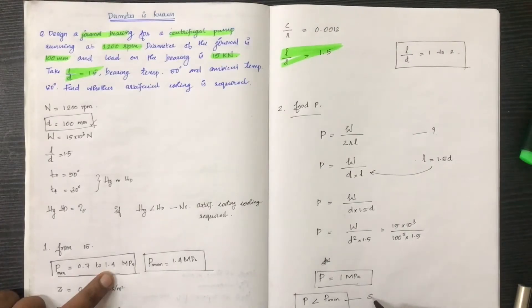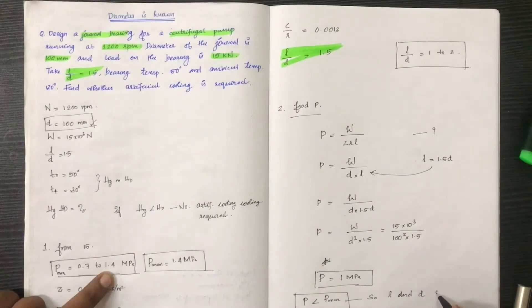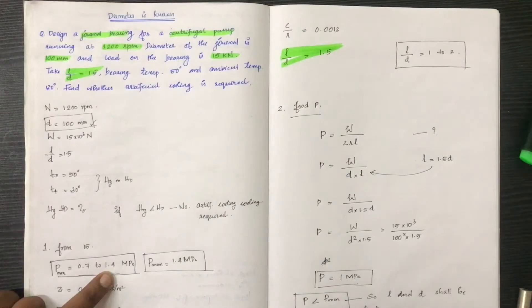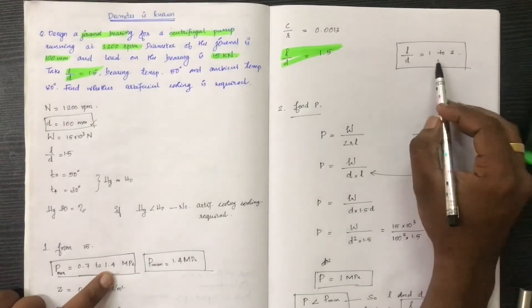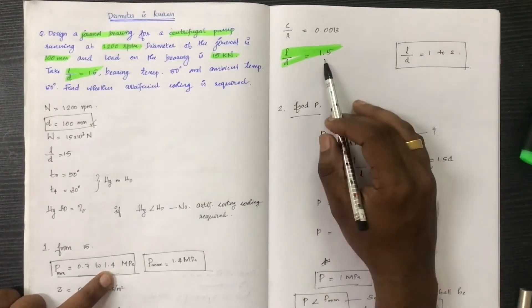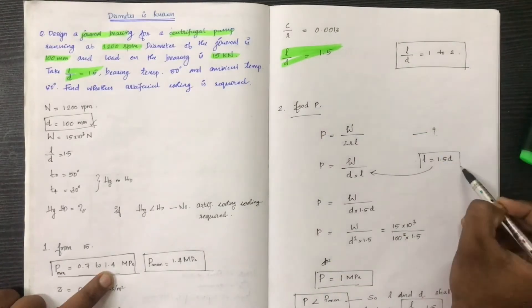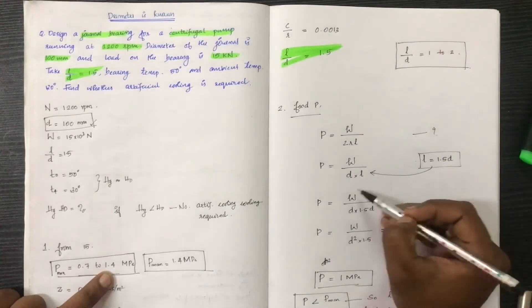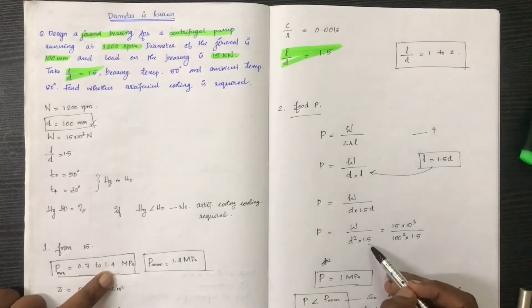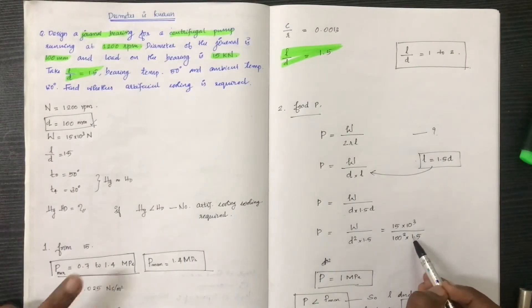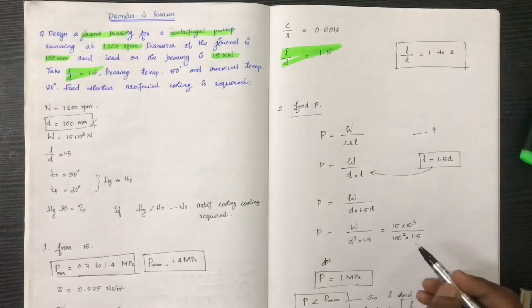L and D shall be kept as: L by D is equal to 1.5. We already have the value, and when we substitute L by D we get the required result.